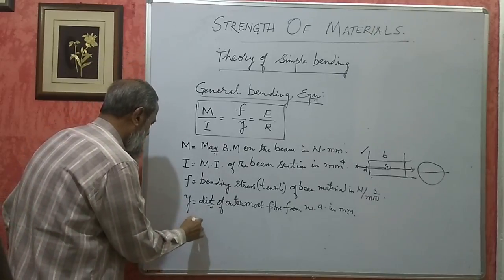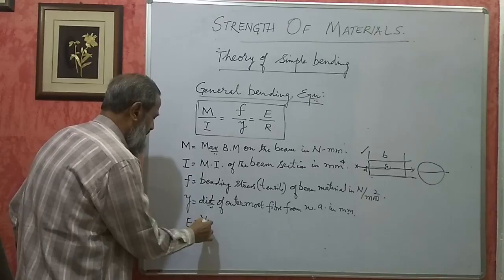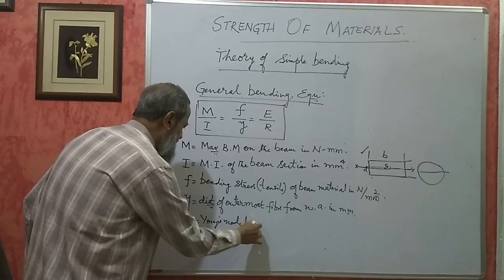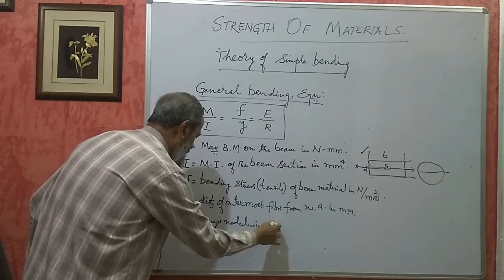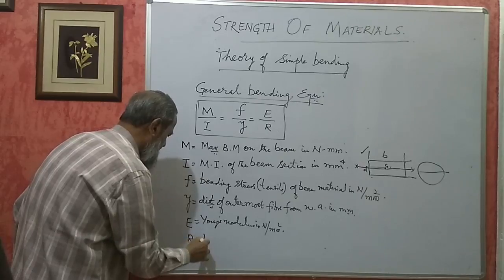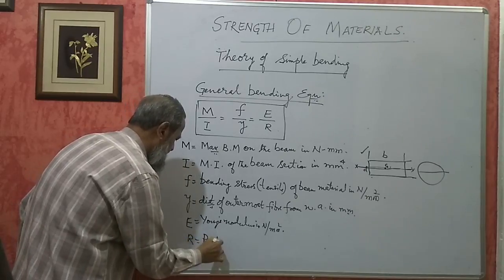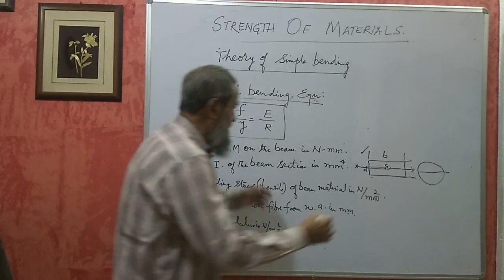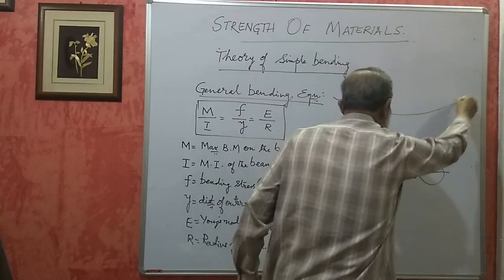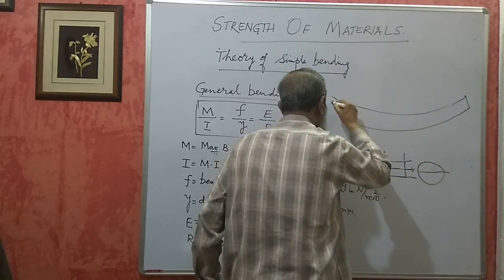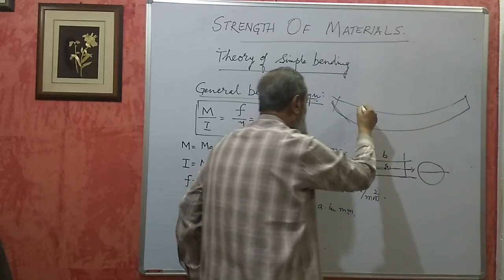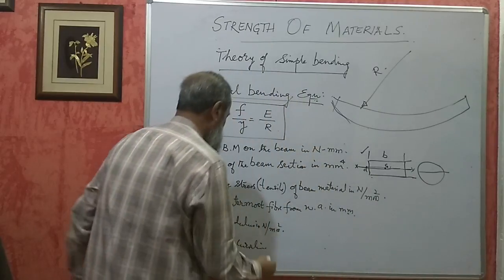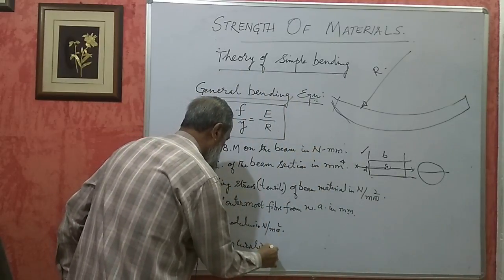E is the modulus of elasticity or Young's modulus of the material of the beam in Newton per mm². R is the radius of curvature of the beam. When the beam bends like this, it becomes part of a circle, and the radius of that circle is called the radius of curvature, in mm.